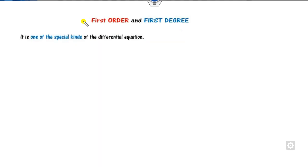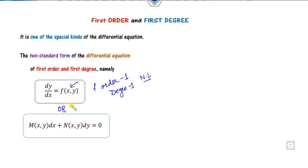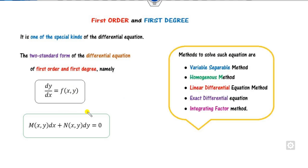First of all, what is the first order and first degree? It is a very special kind of differential equation. The order of this differential equation is 1, the degree is also 1. But whether it is linear or non-linear depends upon the nature of f(x, y). There are various methods to find the solution of these first order, first degree differential equations.